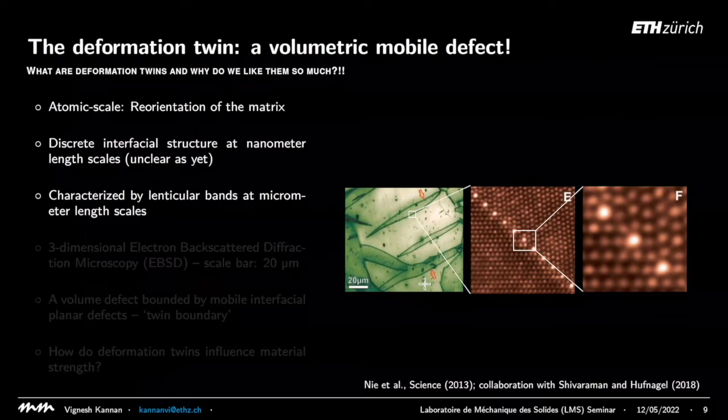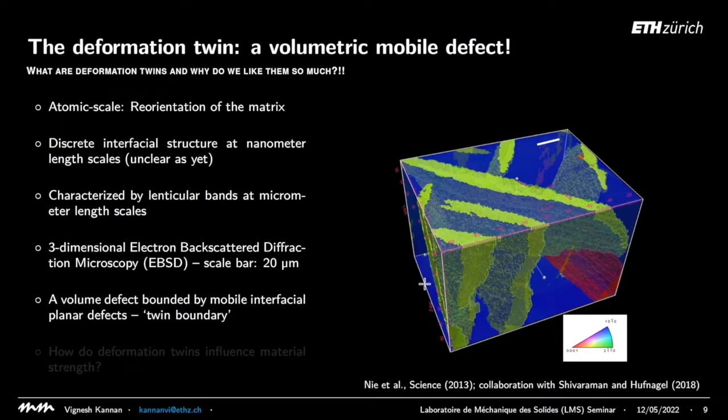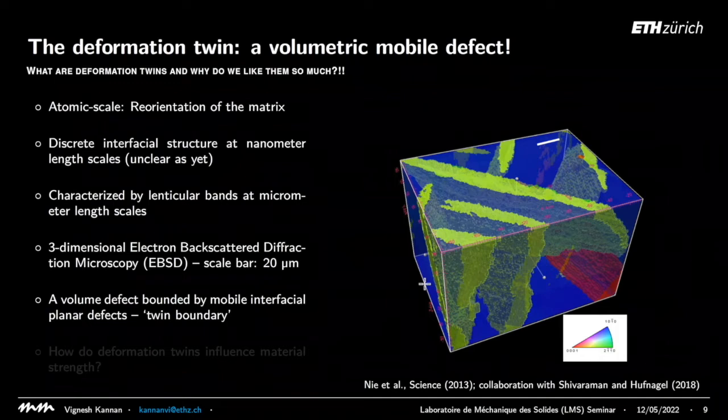To show this in more detail: these experimental images use a technique called electron backscatter diffraction (EBSD) microscopy, done inside an electron microscope where each color refers to the crystal orientation. The specific interest was doing this in 3D — coming in with a femtosecond laser to remove material and construct a three-dimensional surface. The green regions are the deformation twins — they form lenticular bands and are volume defects, while twin boundaries are surface defects.